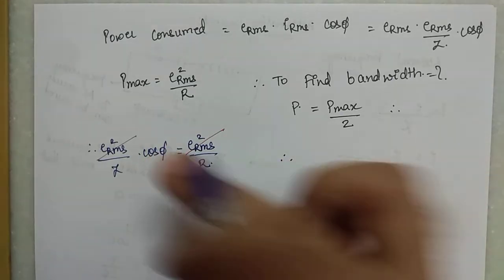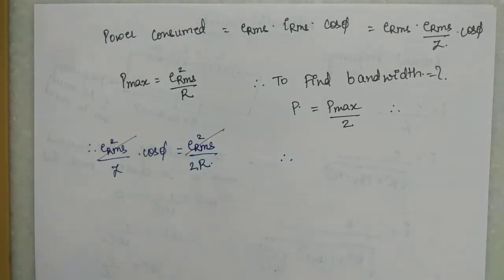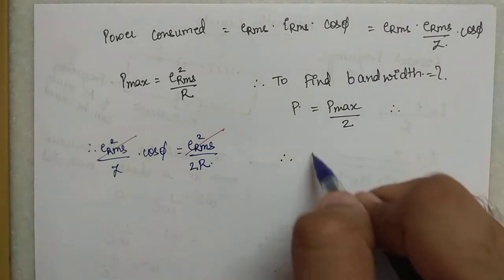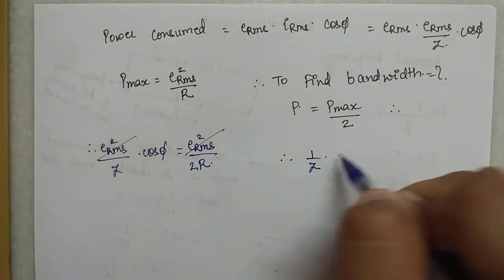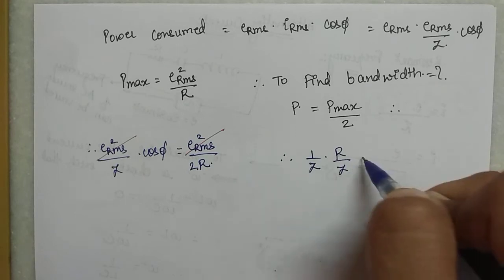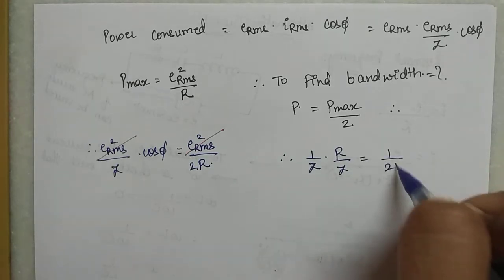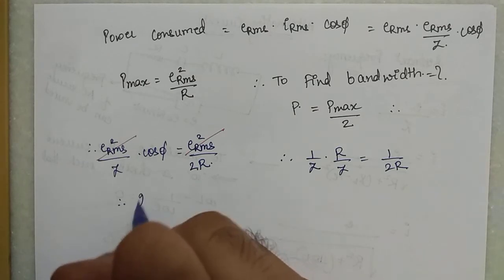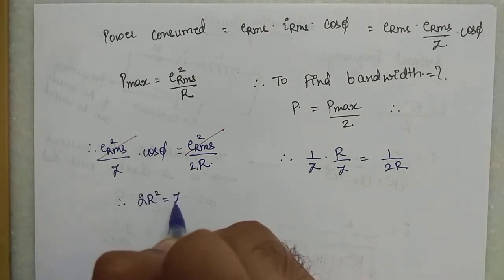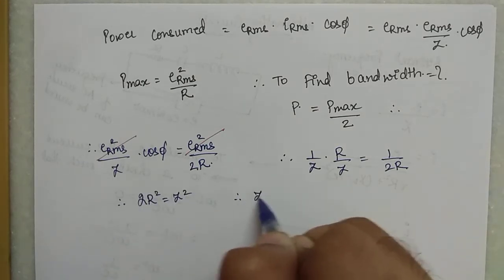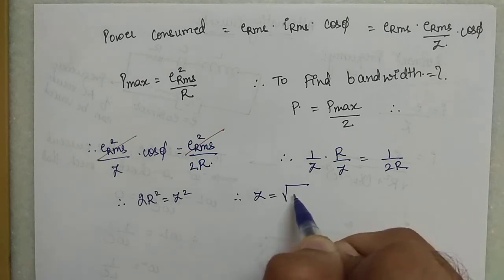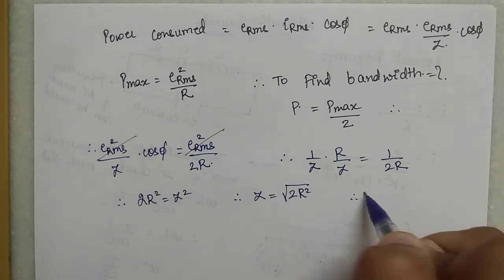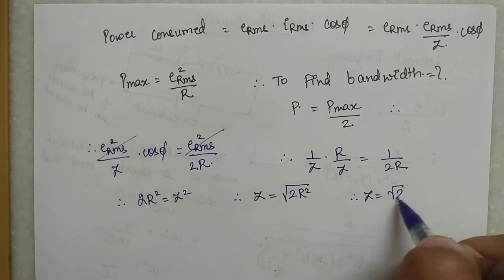Since cos φ = R/Z for an LCR circuit, substituting and simplifying gives 2R² = Z². Therefore Z = √2 · R. This is the impedance condition at the half-power frequencies.